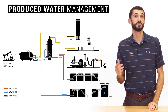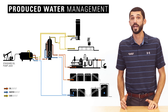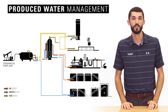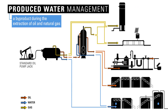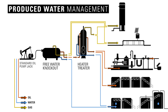This chart shows the general process of oil, gas, and water separation. Produced water is a byproduct during the extraction of oil and natural gas. It comes out of the wellhead and is mixed with the oil and gas. It then goes into various separation vessels where the water, oil, and gas are separated from each other. The water leaves the vessel and travels to storage while the oil and gas go through one or two more stages of separation.